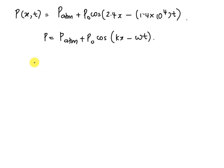On comparing this, we get ω = 1.4×10^4 radians per second.